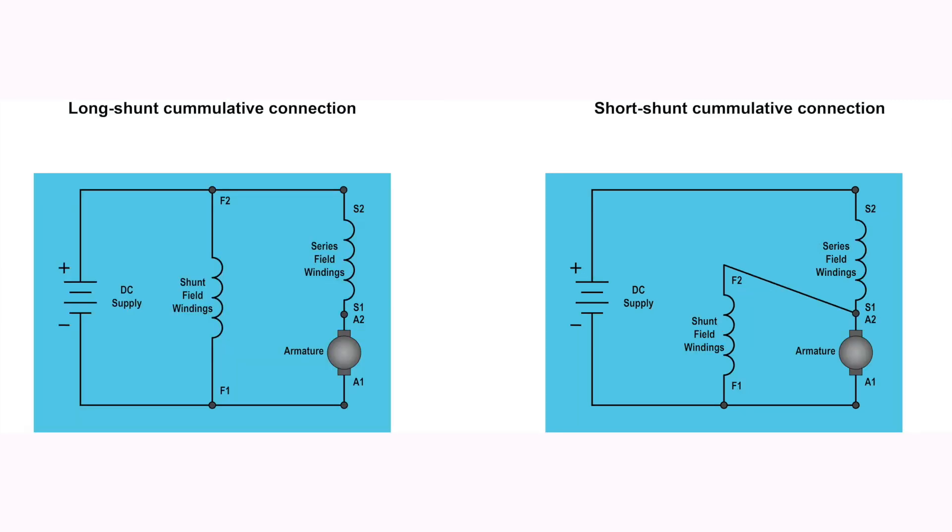There are two major types, one being the long shunt compound DC motor and the other, the short compound DC motor. In the case of the long shunt compound DC motor, the shunt field winding is connected in parallel across the Series combination of both the Series field winding and the armature.